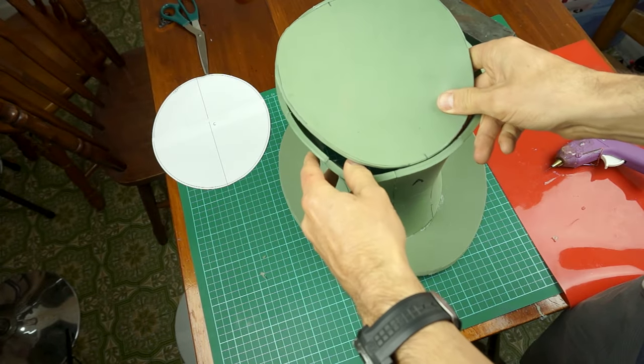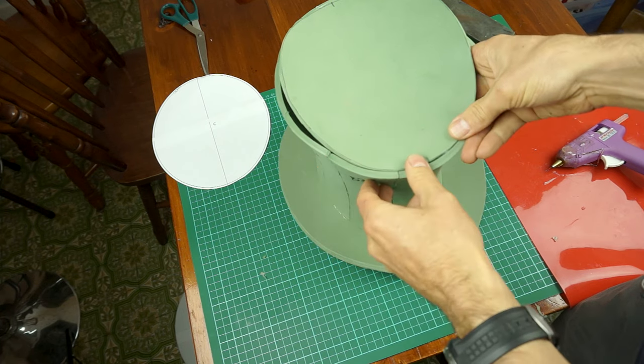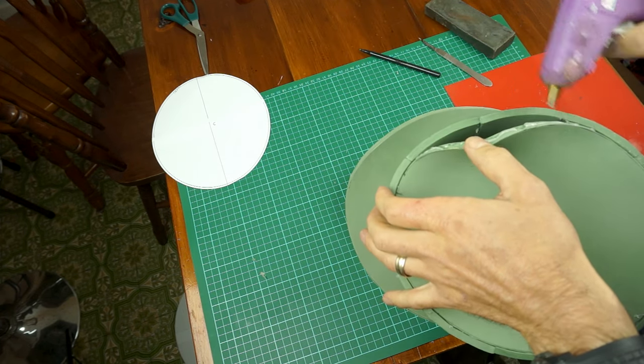And glue it in the same way you did the brim. The front first, then the back, then each side, and then all the spaces in between.